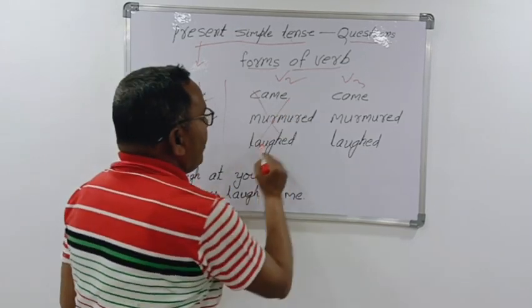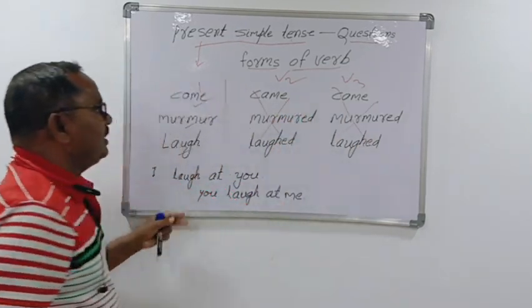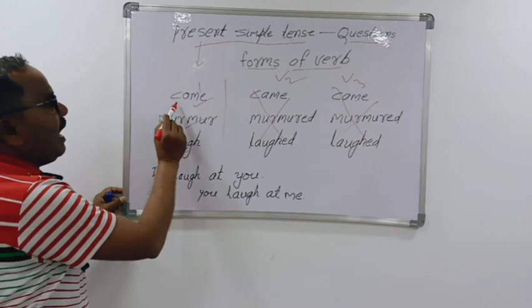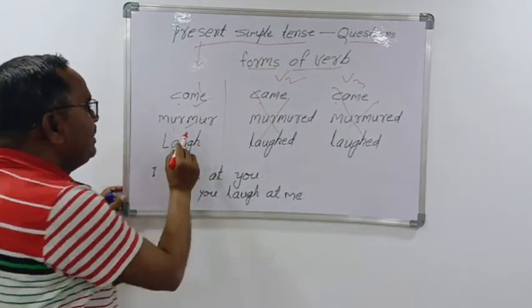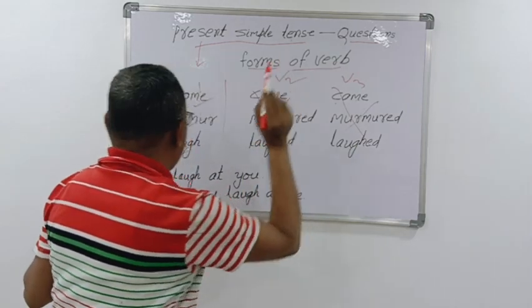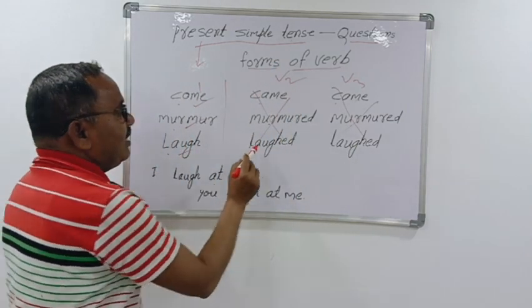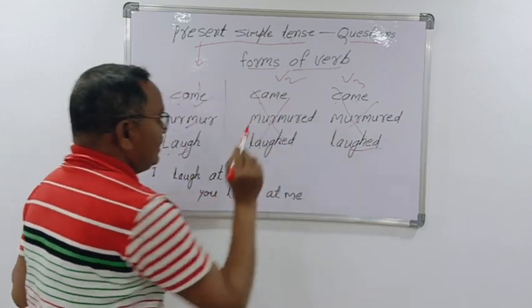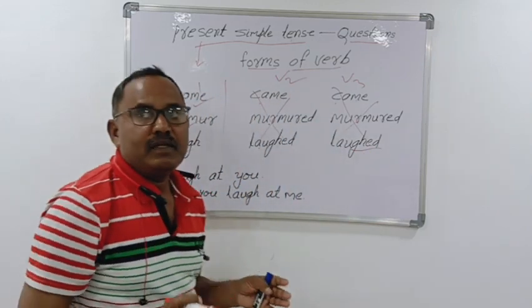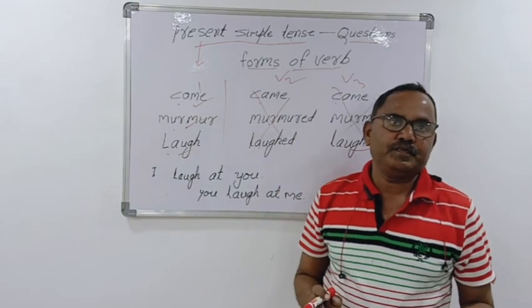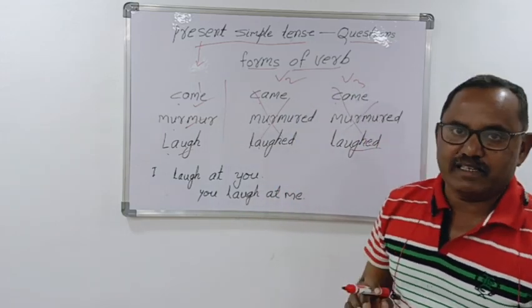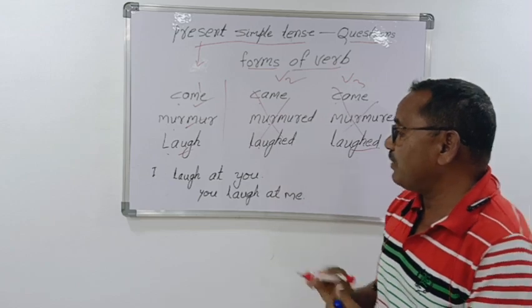Examples: come, come, come; murmur, murmur, murmur; laugh, laughed, laughed. These are the forms of verbs. Last time I have taken stand, sit, go, see, saw, seen, drink - like this. These verbs I have taken.